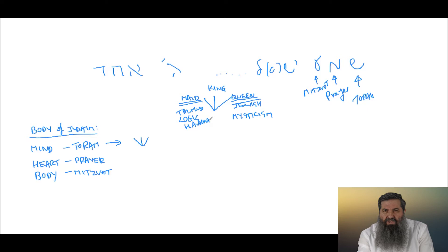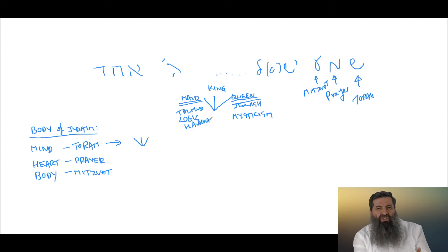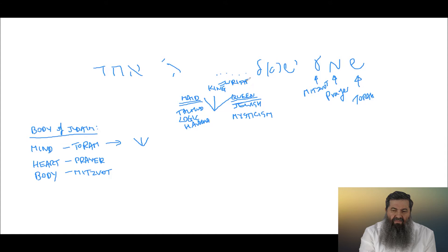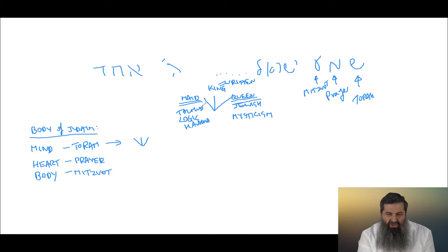Rabbi Shimon explains that Hashem wrote the Torah with Chachma — the wisdom of Atsilut. This Torah is like a garden of Hashem, which is why it has 53 portions, as the number of the word 'gun' (garden). King is the written Torah; the explanation goes to the right, which is Jewish mysticism, and to the left is the Talmud and logical explanations. That is the letter Shin — the mind or Torah part of Judaism.